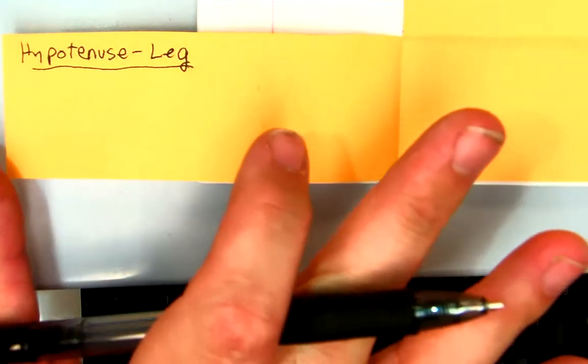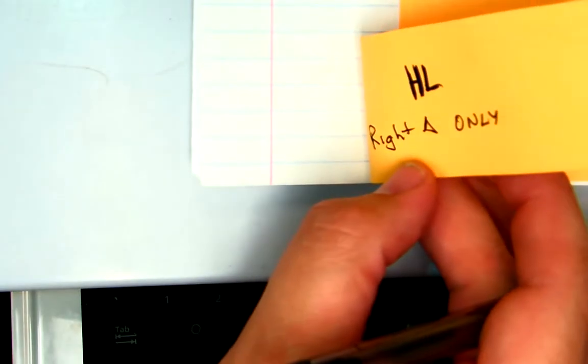Alright, so I'm not exactly sure where the other video stops, so we're at hypotenuse leg. Remember, hypotenuse leg is for right triangles only.